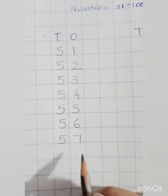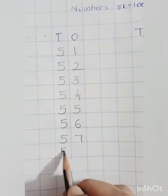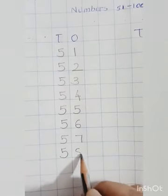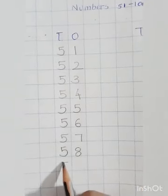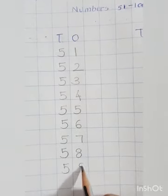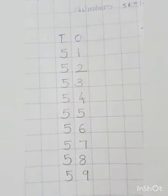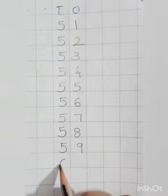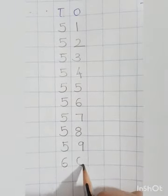5, 7, 57. 5, 8, 58. 5, 9, 59 and then 6, 0, 60.